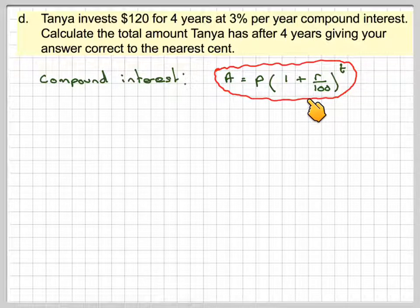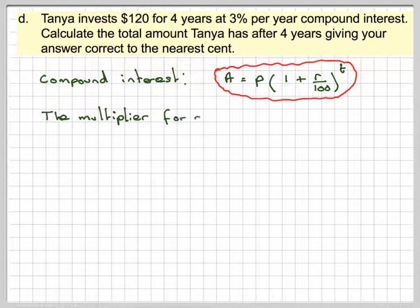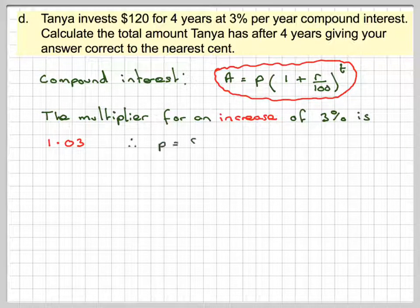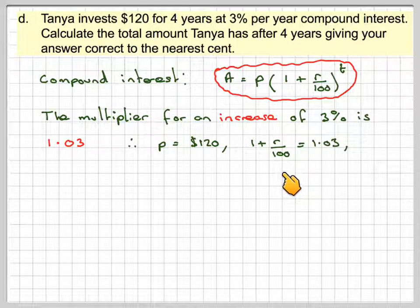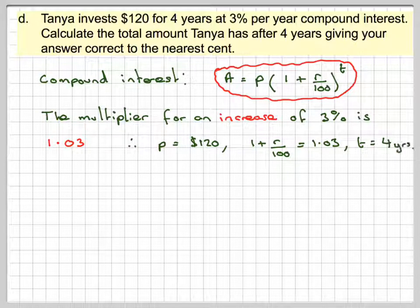But the 1 plus R over 100 is the multiplier for an increase of 3%. So the multiplier for an increase of 3% is going to be 1.03. Therefore, P, the original amount, is 120. 1 plus R over 100 is the multiplier, which is 1.03, and T is 4 years.